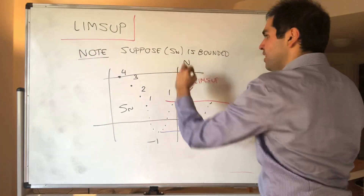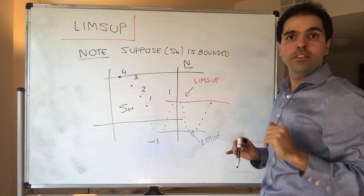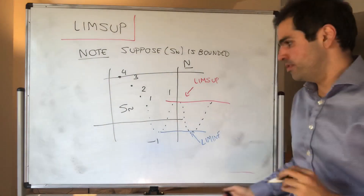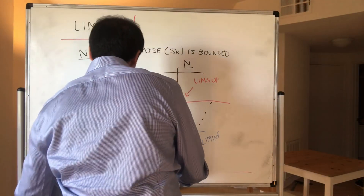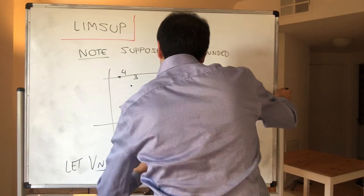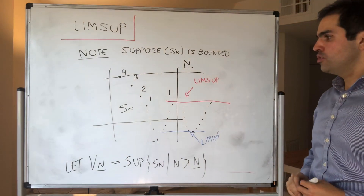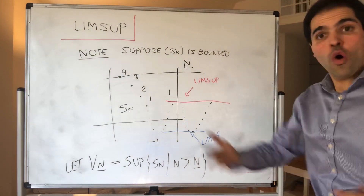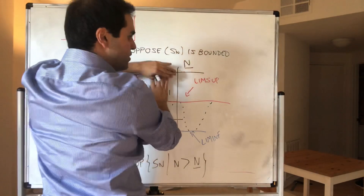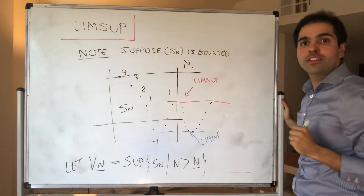The idea is, we would like to say lim sup is the sup, but in the long run. Namely, if capital N is very large, we would like to say the sup after capital N is the lim sup, in some sense. This motivates the following definition involving a helper sequence. Let Vn, given a threshold capital N, be the largest possible value of Sn after capital N — the supremum in the long run — and this is what the lim sup is.